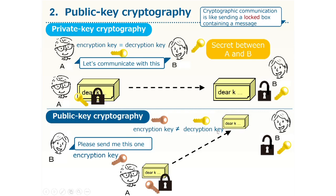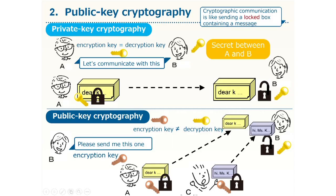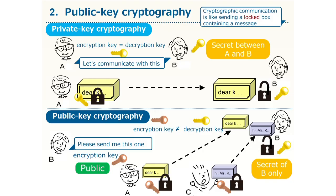The encryption key can be used not just by Mr. A; other people can use the same key. For example, Mr. C can use the same key to encrypt the box and send it off. Then Ms. B can use her decryption key to open the box as before. Note that only the key to open the box should be kept secret — it is a secret key for herself only. The key to close the box can be made public. The decryption key is her own secret, while the corresponding encryption key can be public, and it is okay for anybody and everyone to know her encryption key. So everyone can send an encrypted message to Ms. B using her encryption key.